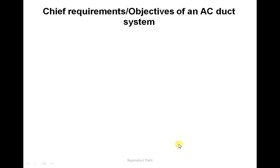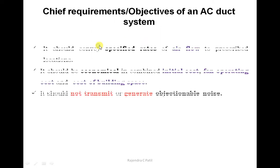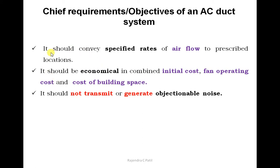The objectives of air conditioning ducts are three. First, every duct should convey the correct amount of airflow to the prescribed location. Second, ducts should be economical in both initial cost and operating cost. Third, while delivering conditioned air from AC equipment to the conditioned space, the duct should not generate or transmit any type of objectionable noise. That is why the design of a duct is very important.